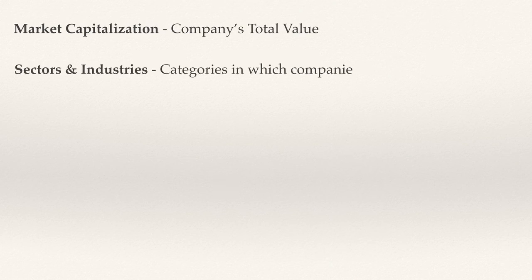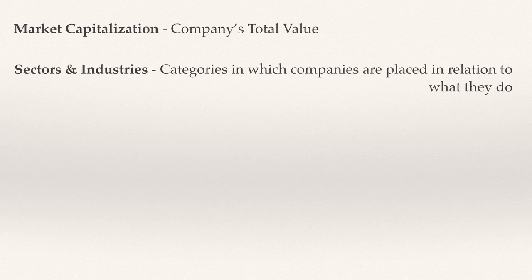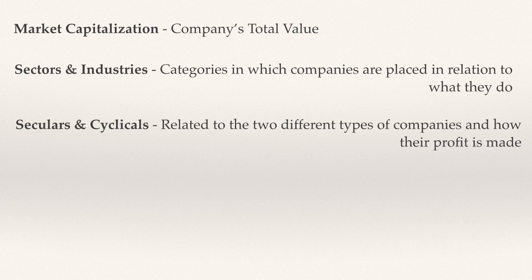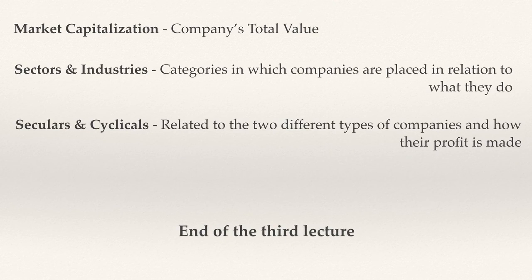The three major descriptions of stock discussed in this lecture were market capitalization, which is the company's total value; sectors and industries, which are categories in which companies are placed in relation to what they do; and seculars and cyclicals, which relate to the two different types of companies and how they make their profits. This concludes this lecture on how stocks are described. Thank you very much.